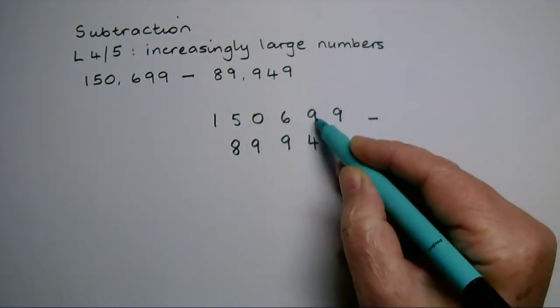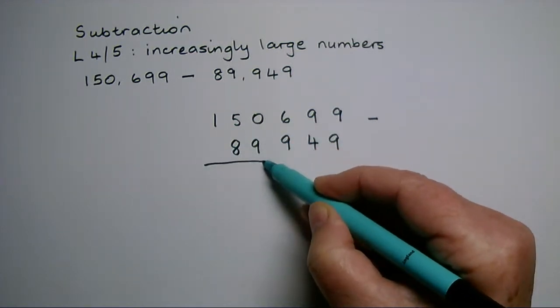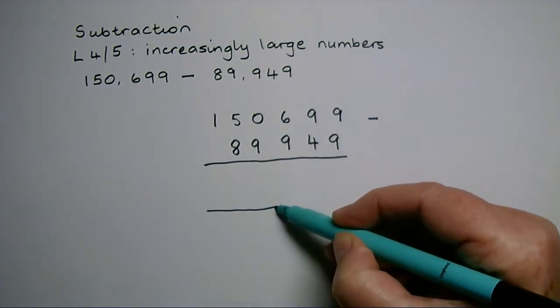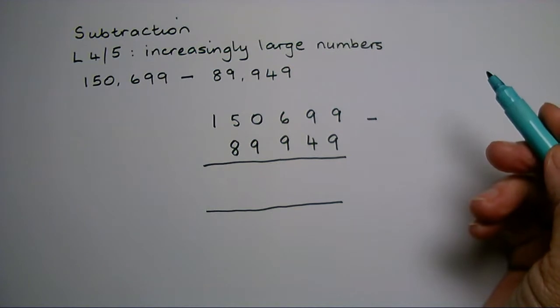The units are underneath each other, the tens, hundreds, thousands, and so on. Now I do the takeaway. I can tell from this number I'm going to need to do some exchanging and borrowing at some point during the calculation.